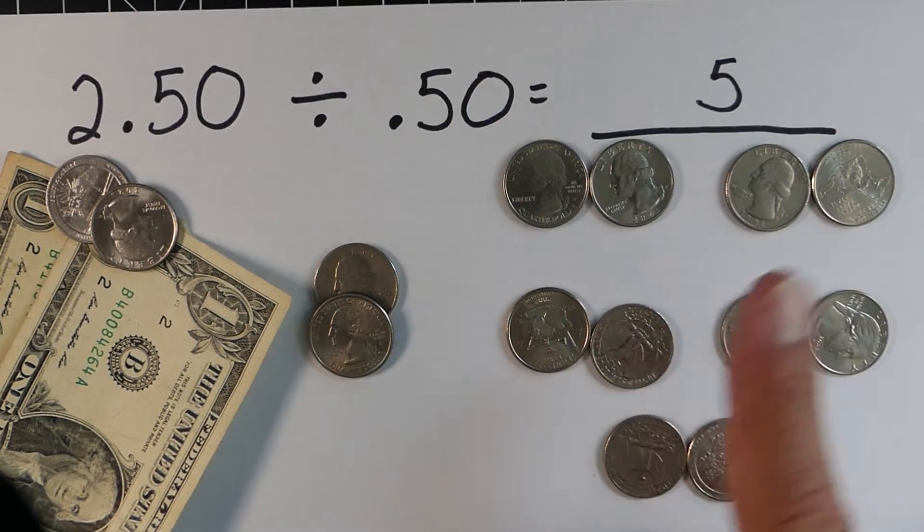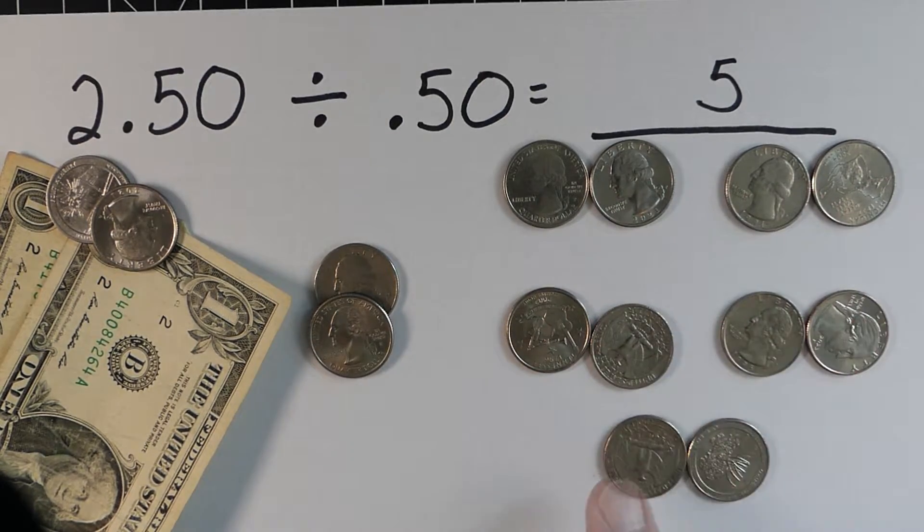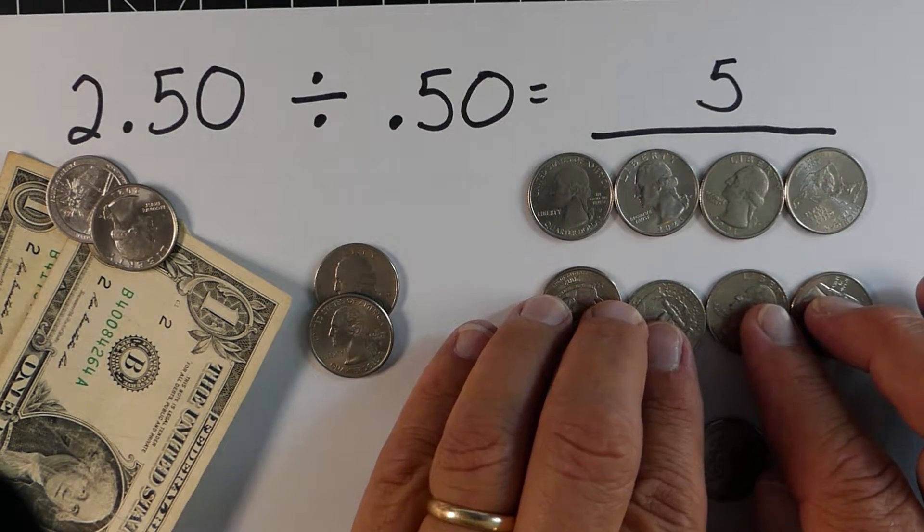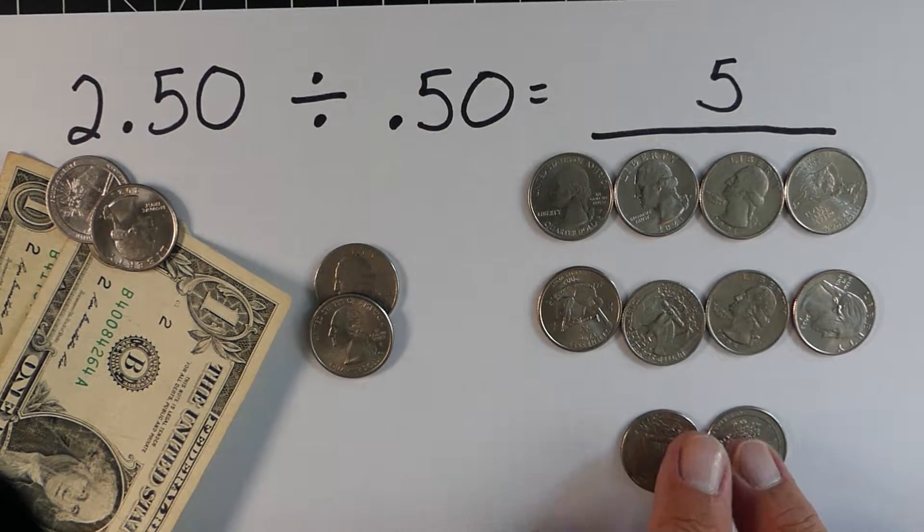And you can see there's 50 cents, a dollar, $1.50, $2.00 and $2.50. If we put them together you can see there's a dollar, the $2.00, and we have our 50 cents left over.